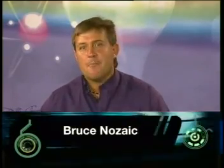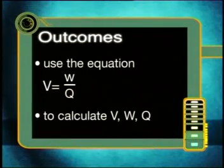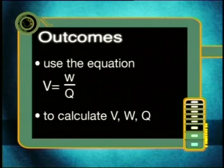Hi there everybody and welcome to lesson number two. Many of you may not be aware, but we benefit daily from the work done by electrical currents in many different types of electrical circuits — namely operating major industrial plants, simple household appliances like stoves, fridges, and even light bulbs. In today's lesson we will learn how to measure the work done by an electric current. By the end of this lesson you should be able to use the equation V equals W over Q and calculate the values for V, W, and Q.